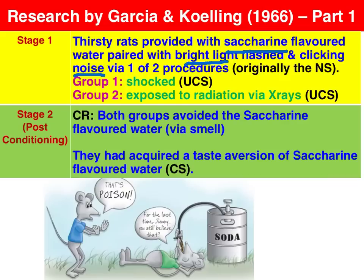There were two groups of rats. One was electrically shocked, which was the unconditioned stimulus, and reflexively evoked a pain response — pain being the unconditioned response. A second group was exposed to radiation via x-rays, which was the unconditioned stimulus, reflexively evoking illness, which was the unconditioned response for that group.